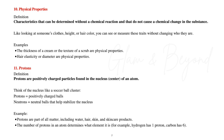Number eleven: protons. Protons are positively charged particles found in the nucleus — the center of an atom. Think of the nucleus like a soccer ball cluster: protons are the positively charged balls, and neutrons are the neutral balls that help stabilize the nucleus. Protons are part of all matter including water, hair, skin, and skincare products. The number of protons in an atom determines what element it is — for example, hydrogen has one proton and carbon has six.